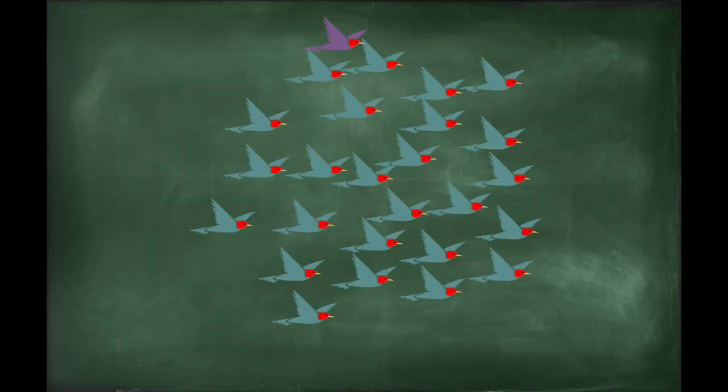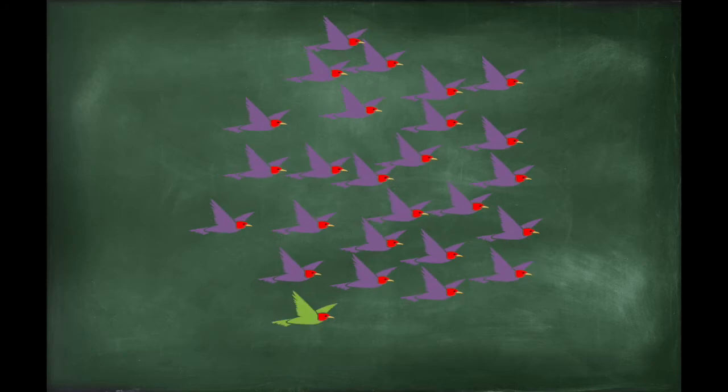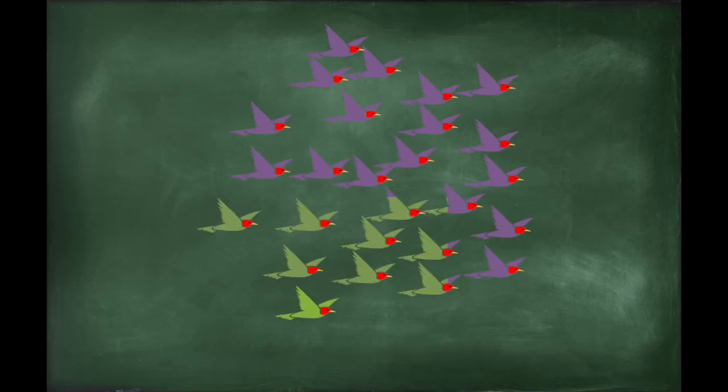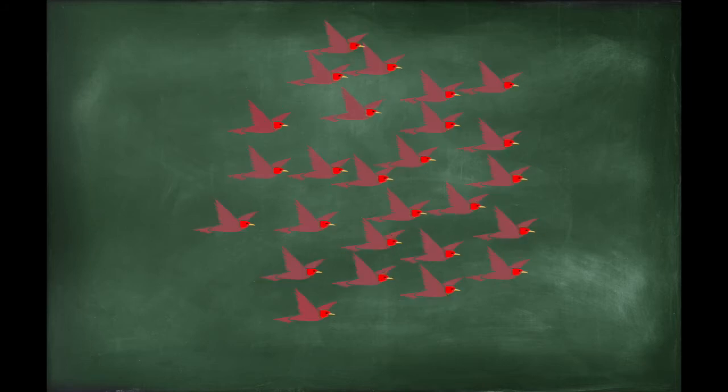Functionally, this means birds on one end of the flock that change their velocity send that information very quickly to the other end of the flock. The authors of the paper suggest that this means that the correlation length goes to at least the size of the flock.